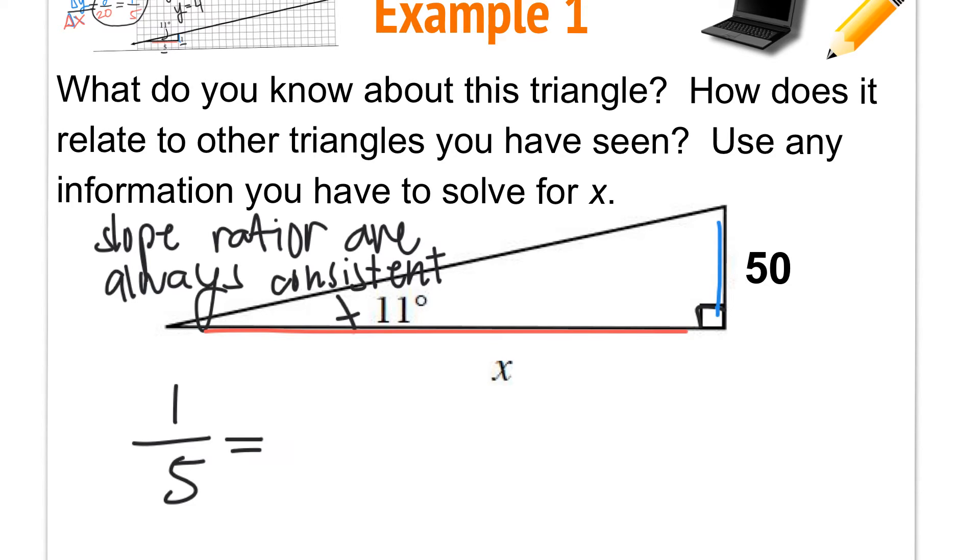So in this case, 1 over 5 would equal 50 over - you already guessed it - X. From there you can keep going. I like to use this method just because it helps clear things out for me. But again, if you're going to use this, make sure you know what it means and how to use it. So X equals 5 times 50, which is 250.